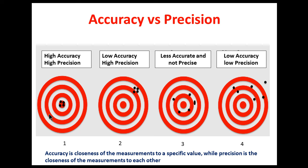Consider this bullseye target. If we aim at the target and all the readings are close to the true value, that is high accuracy. And since every reading is close to each other as per the definition of precision, this first picture is considered as high accuracy and high precision.